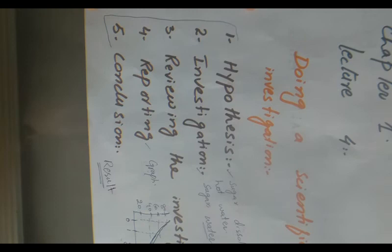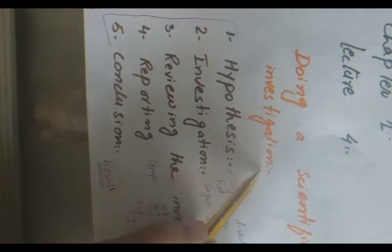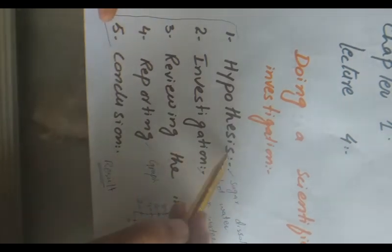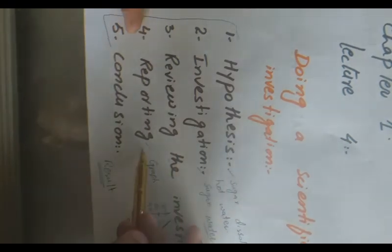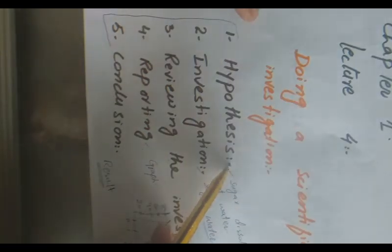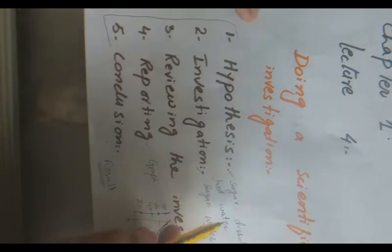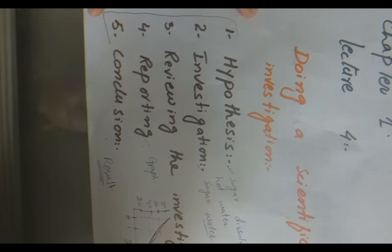These are the five steps for doing a scientific investigation. Investigation is a systematic process — you cannot conclude before forming a hypothesis, and you cannot report anything before the investigation. You have to follow the same procedure. The hypothesis may be right or may not be right, as I already told you. In this case our hypothesis was correct, and we conclude that sugar dissolved more fast in hot water than in cold water. I hope you understood the lecture very properly.